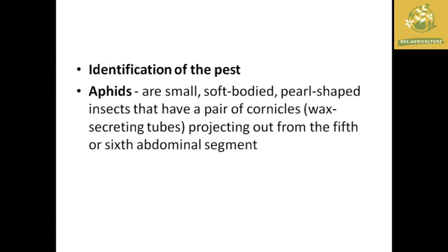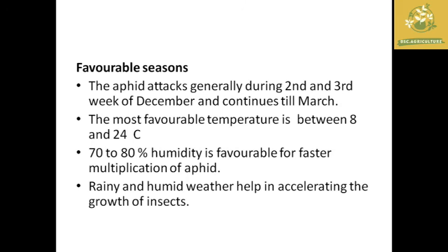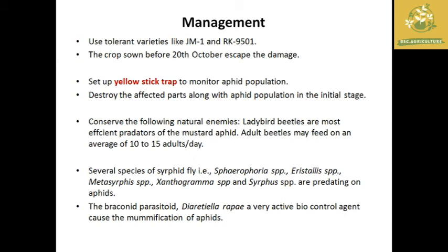Aphids are small, soft-bodied, pear-shaped insects with a pair of cornicles projecting from the fifth or sixth abdominal segment. They typically attack during the second and third week of December, continuing till March. The most favorable conditions are temperatures between 8 and 24 degrees Celsius with humidity of 70 to 80%, which accelerates their multiplication.